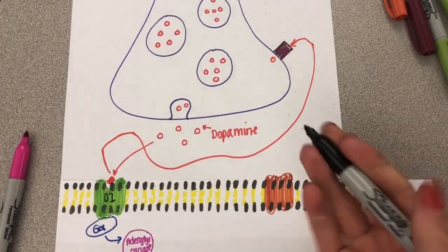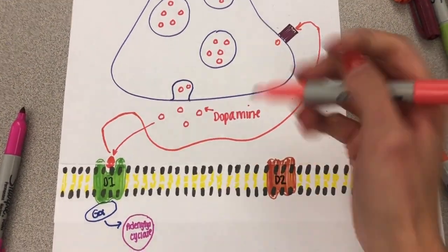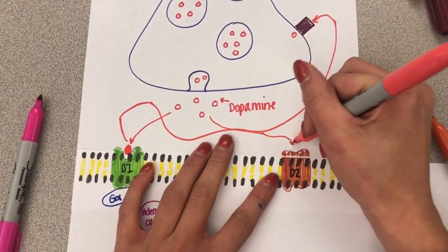Soon, dopamine binds to a D2 receptor to elicit a depressive response.